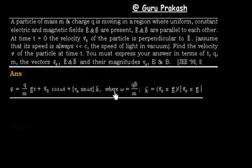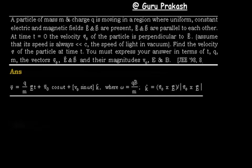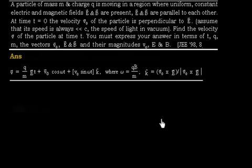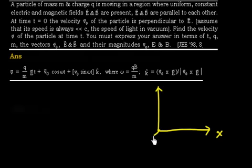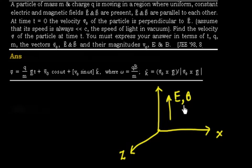This problem gives us a particle of mass m and charge q moving in a region where we have both a uniform electric field and magnetic field. Let us make the diagram first. We set up x, y, and z axes. In the y-direction we have the electric field as well as the magnetic field — both parallel to each other. At t = 0, the velocity v0 of the particle is perpendicular to the electric field.